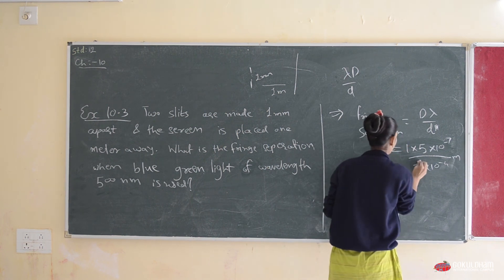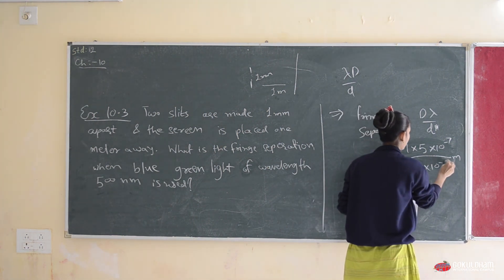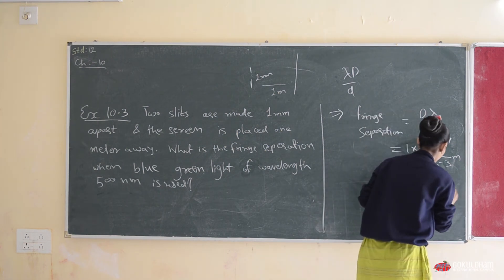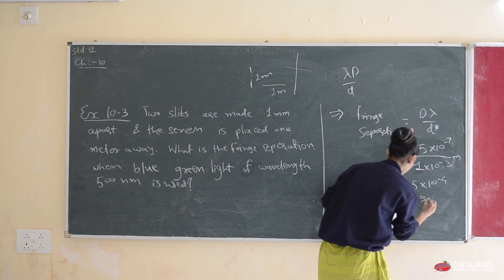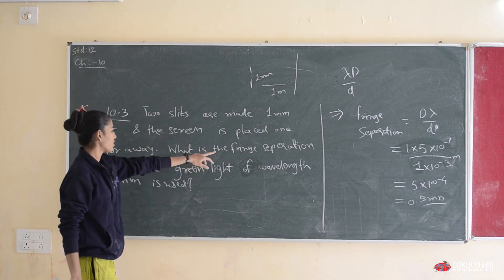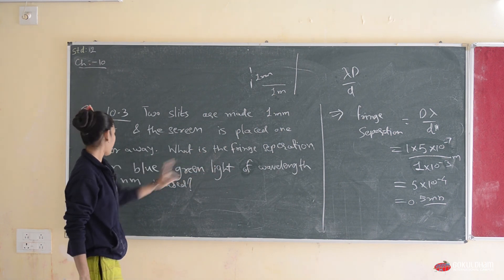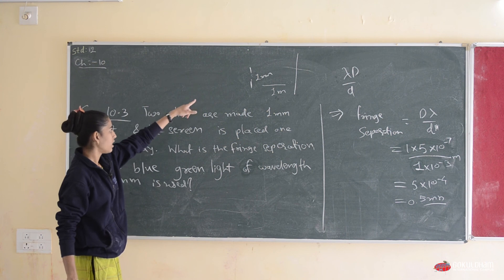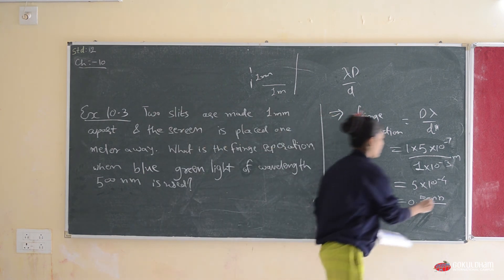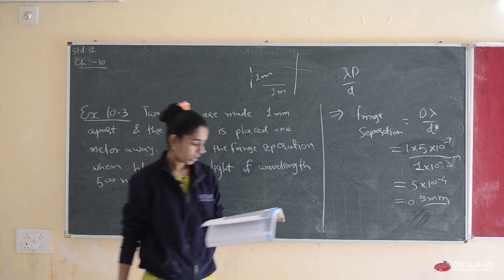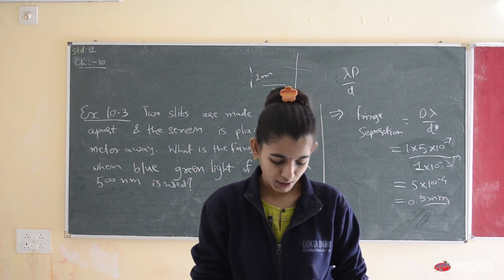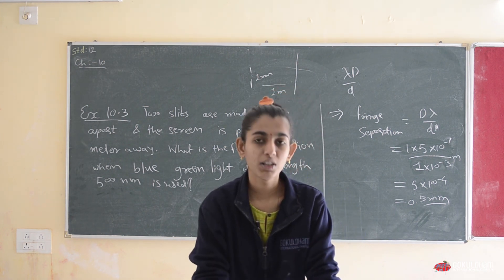Correcting: 1 × 10⁻³ in the denominator. Solving the full equation gives 5 × 10⁻⁴ m, which equals 0.5 mm. So the fringe separation for blue-green light of 500 nm wavelength incident on these two slits is 0.5 mm. This is the solution for Example 10.3. Example 10.4 is entirely theory-based, so please review it on your own. The next topic will be discussed in the next video.